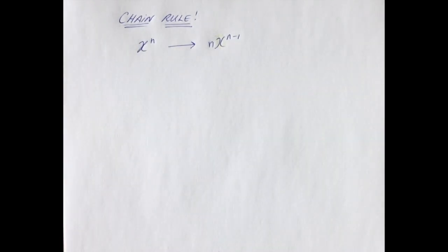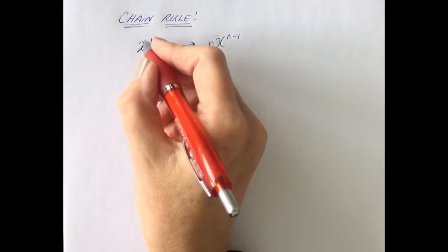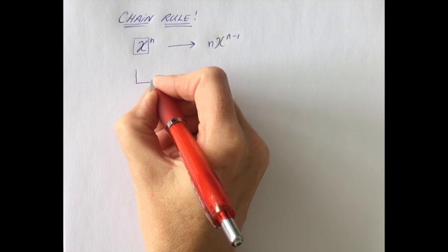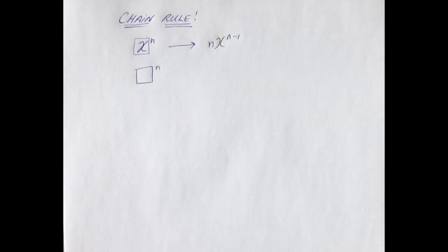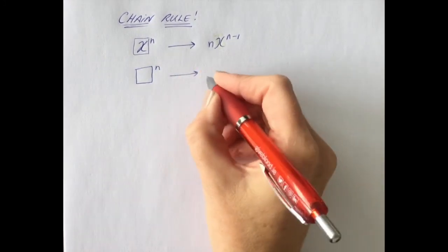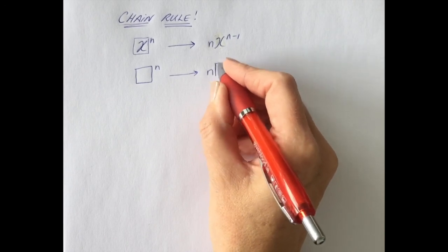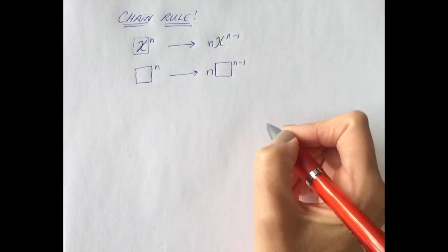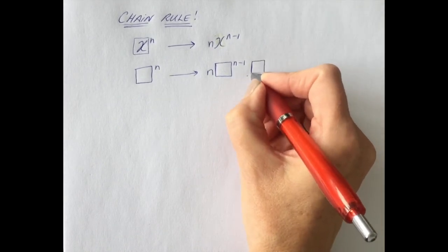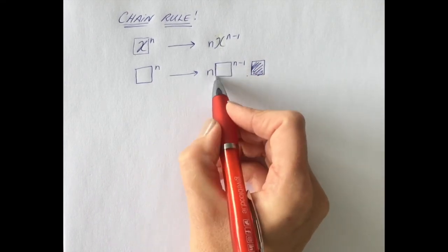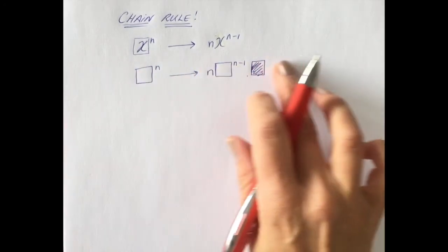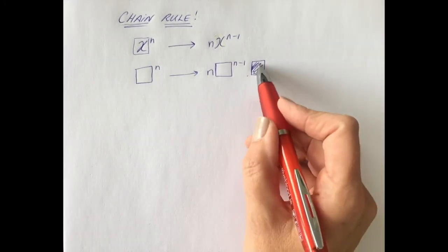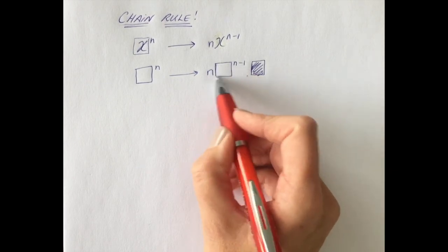Chain rule kicks in when you have something more complicated than just an X raised to a power. The way you do that is you bring down the power as before, whatever is being raised to the power stays, you take one away from the power, and then you multiply by the differential of whatever that was. I always use this box method — the shaded box is always the differential of the plain box.